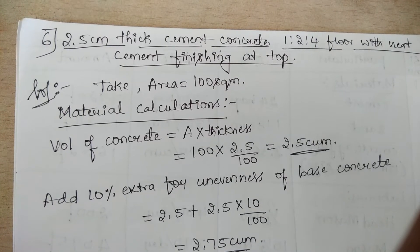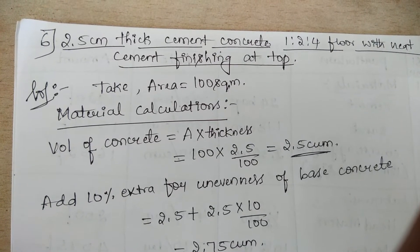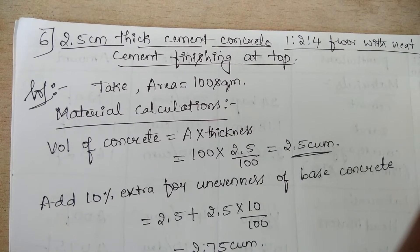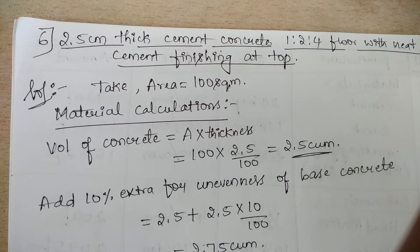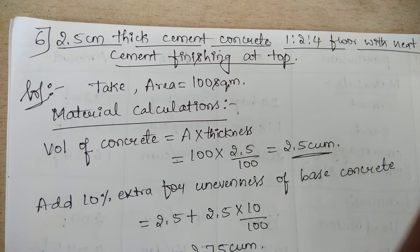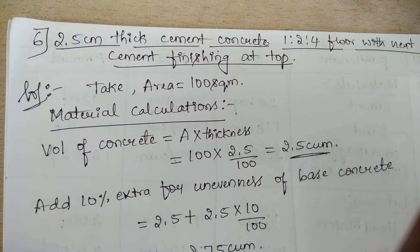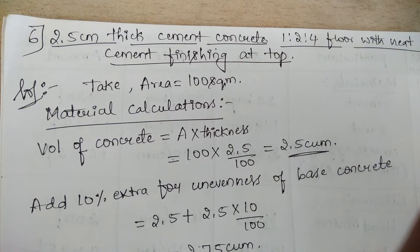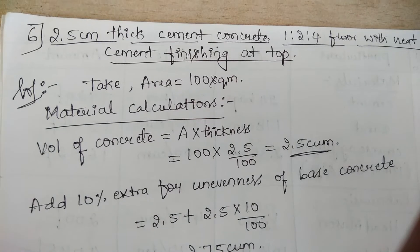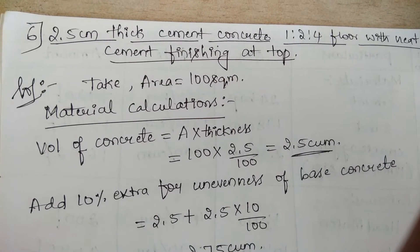In this video I will teach you how to find rate analysis for 2.5 cm thick cement concrete 1:2:4 floor with neat cement finishing at top. Let us start.